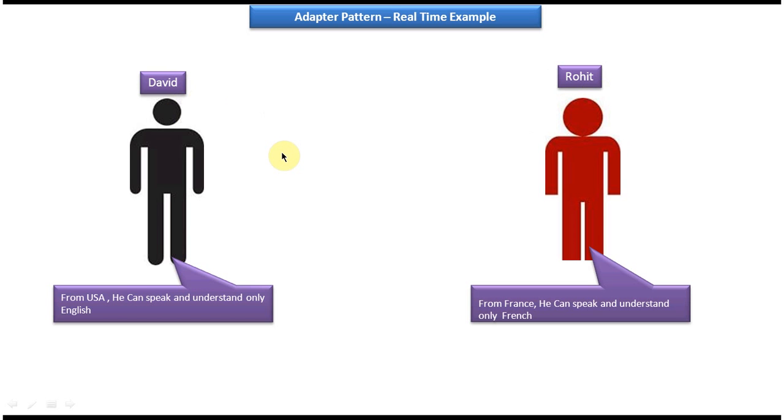So what we can do is we can introduce another person called John. So what this John will do is he can translate English to French, also he can translate French to English, meaning this John person knows both English and French. He can speak English and he can understand English, also he can speak French and also he can understand French. So this John person will act as an adapter or translator.